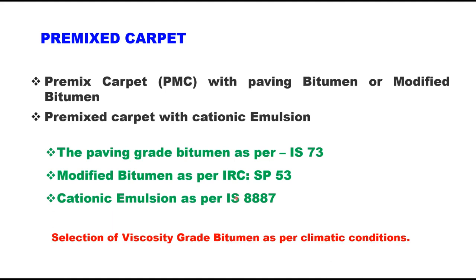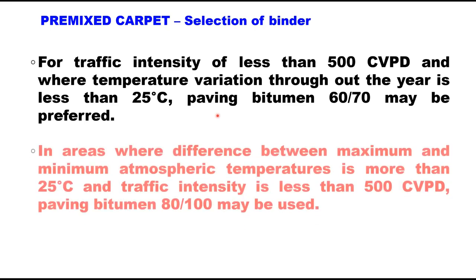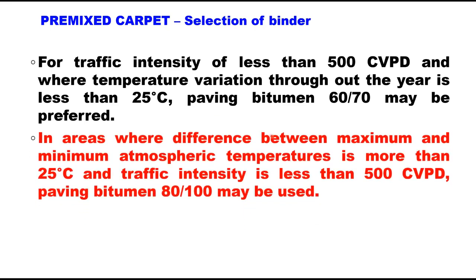The selection of viscosity grade binder depends upon climatic conditions. IRC code provides guidelines: for traffic intensity less than 500 CVPD and temperature variation less than 25°C throughout the year, paving grade 60/70 may be preferred. Where the difference between maximum and minimum atmospheric temperature is more than 25°C and traffic is less than 500 CVPD, then 80/100 bitumen may be used.